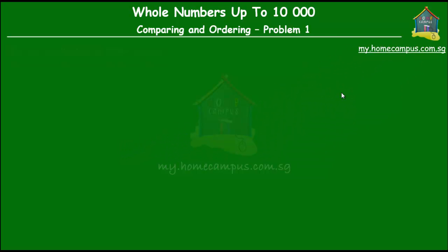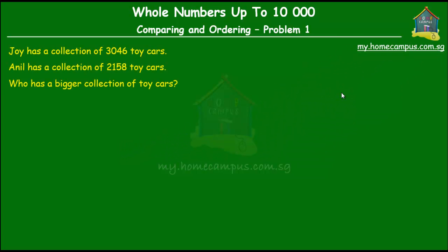Hello and welcome to my.homecampus.com.sg. Let's learn about comparing using this question. Joy has a collection of 3,046 toy cars. Anil has a collection of 2,158 cars. Who has a bigger collection of toy cars?